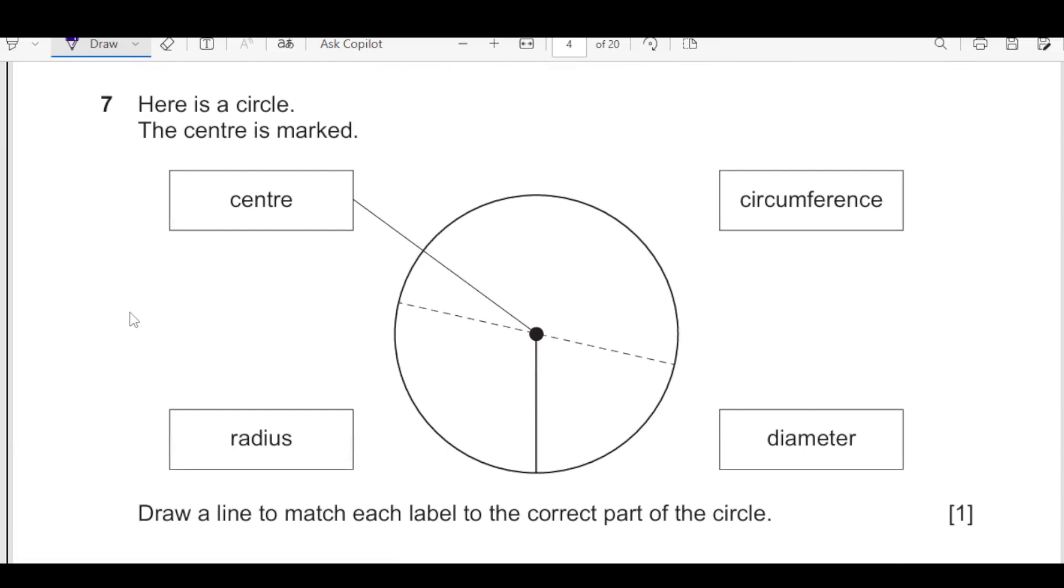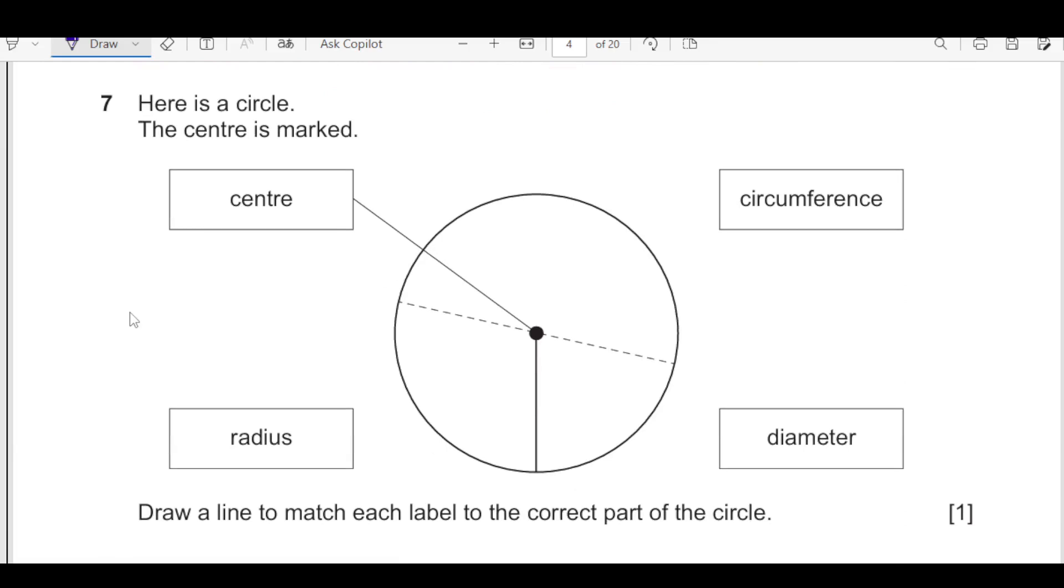Question number 7 here is a circle. The center is marked. Draw the line to match each label to correct part of the circle. We have a radius here. As you know that radius is the line that touches circumference of the circle and the center. Then the circumference is all around the circle, the outer part and the diameter is this dotted one which is the line joining the end points of the circle passing through the center.